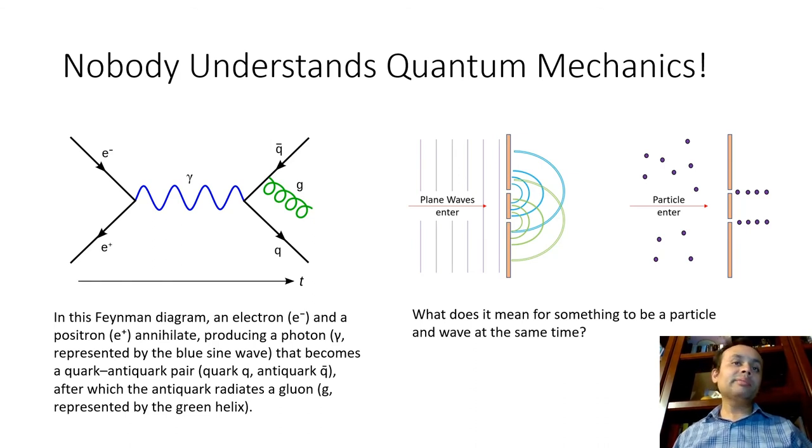Another really interesting example from the history of science is quantum mechanics. It would be safe to quote Richard Feynman to state that nobody understands quantum mechanics. And yet, from a predictive perspective, it has proven to be the most powerful theory ever devised by humans. But that said, from an ontological perspective, if you want to root it into our everyday experience, then we still cannot really answer questions like, what does it mean for something to be a particle and wave at the same time?